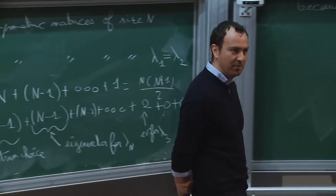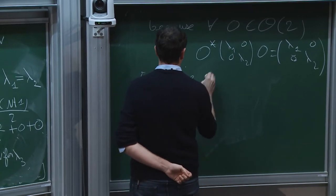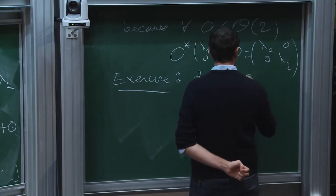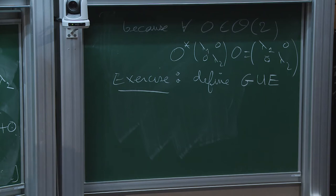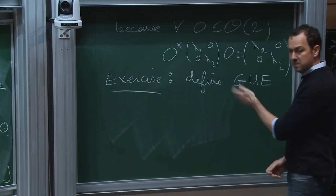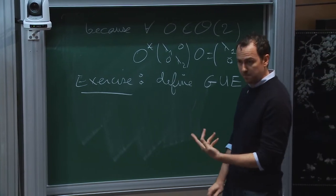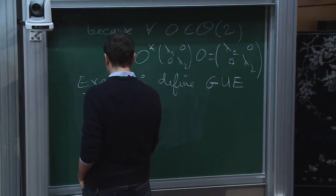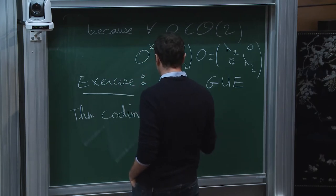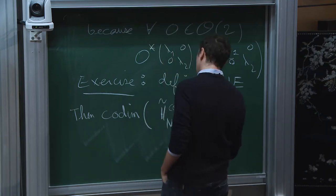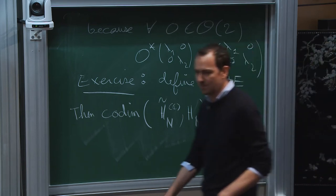Exercise: do the same for the so-called Hermitian ensemble, not the symmetric one. You define the GUE — instead of invariance by orthogonal conjugacy, you take invariance by unitary conjugacy and enlarge the space to Hermitian matrices. It happens that the entries are Gaussian with some normalization chosen so that you have the good invariance property. The codimension of the set of Hermitian matrices with multiplicity in the spectrum is actually 3, not 2.